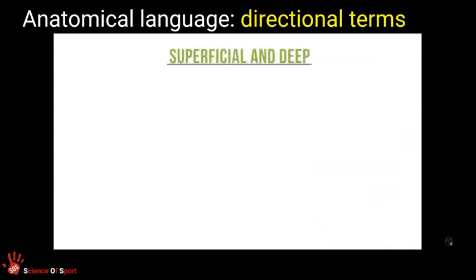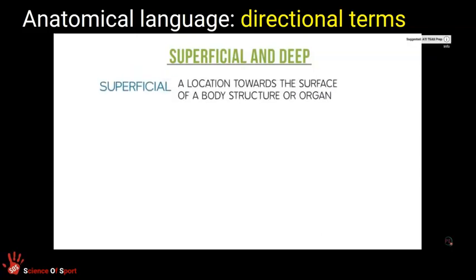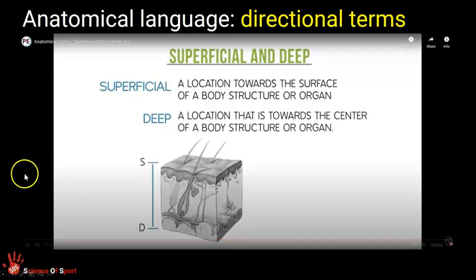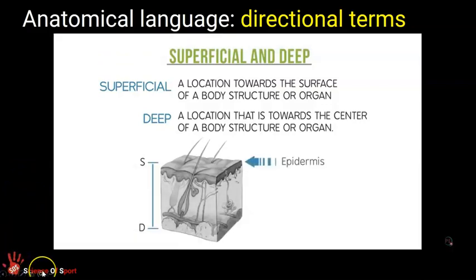Superficial and deep are the last two directional terms we will cover. Superficial refers to a location towards the surface of a body structure or organ, while deep is concerned with a location towards the center of a body structure or organ. For instance, looking at a cross section of the skin, the top skin layer — called the epidermis — is superficial to the subcutaneous layer, while the subcutaneous layer is considered deep to the epidermis.